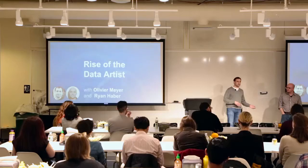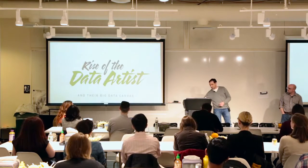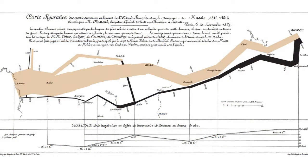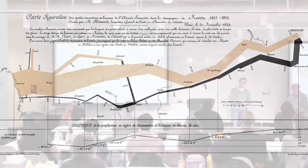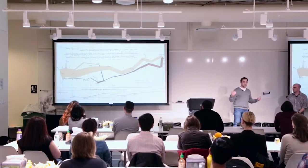Before I get into the meat of the presentation with Ryan, I thought we could go back in time about 150 years to 1869 and meet maybe what was the first data artist — or at least one of the first — and that's Charles Minard. Charles created a visualization that Stephen Few and Edward Tufte refer to as one of the best examples of a statistical visualization. This visualization captures Napoleon's March on Moscow.